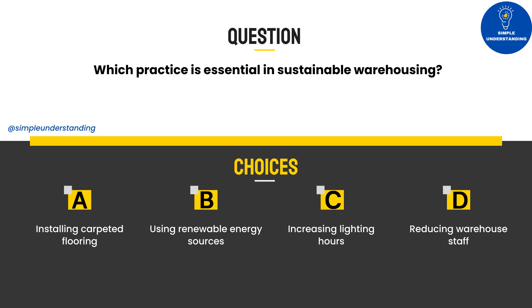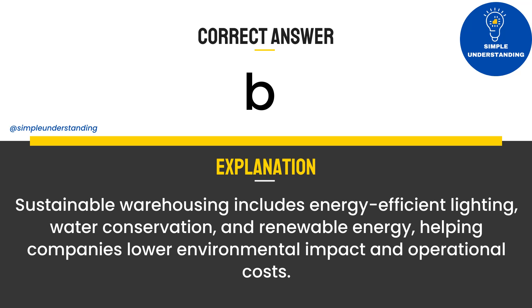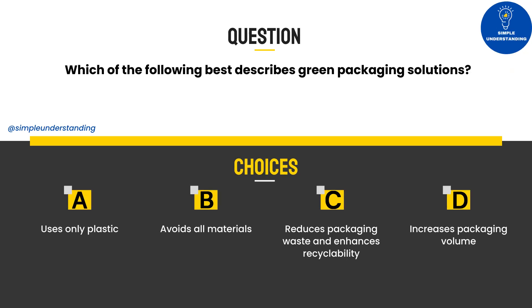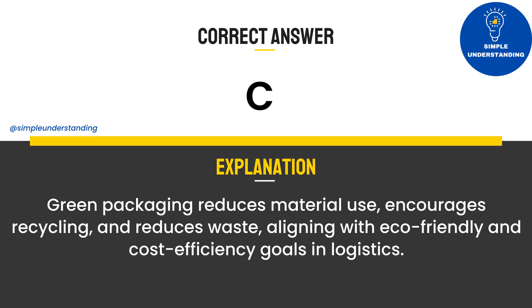Sustainable warehousing includes energy-efficient lighting, water conservation, and renewable energy, helping companies lower environmental impact and operational costs. Question 3: Which of the following best describes green packaging solutions? A. Uses only plastic. B. Avoids all materials. C. Reduces packaging waste and enhances recyclability. D. Increases packaging volume. Answer: C. Green packaging reduces material use, encourages recycling, and reduces waste, aligning with eco-friendly and cost-efficiency goals. Question 4: In sustainable logistics, resource optimization is aimed at: A. Minimizing labor costs. B. Reducing resource waste. C. Increasing warehousing space. D. Decreasing product quality. Answer: B.